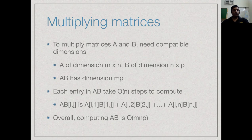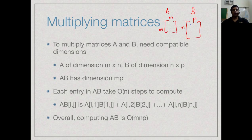To multiply two matrices A and B you need compatible dimensions. If we have A and B, the number of columns in A must match the number of rows in B. So we have an m×n matrix A and an n×p matrix B, and the final matrix is m×p — the same number of rows as A and the same number of columns as B.